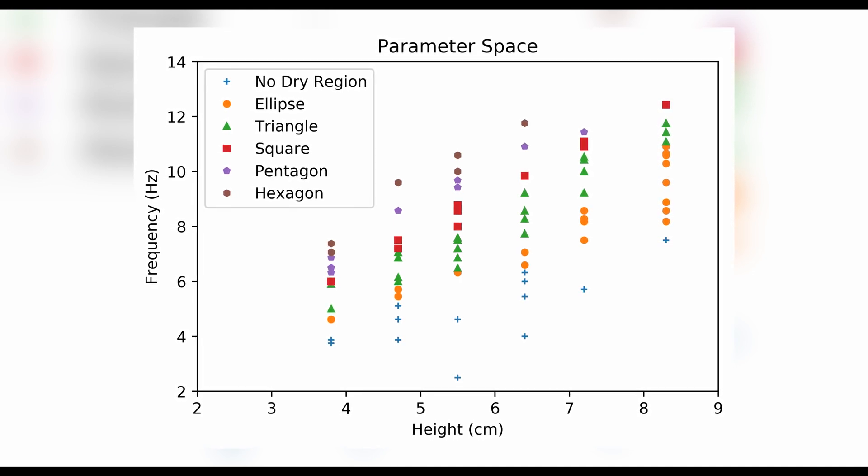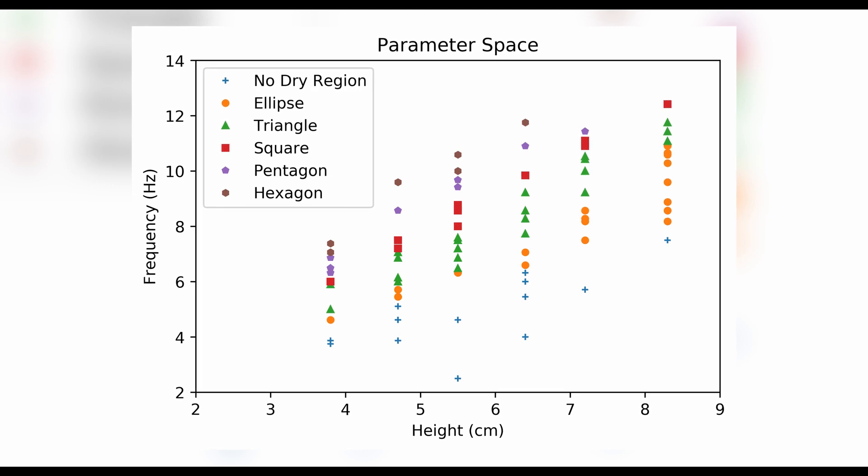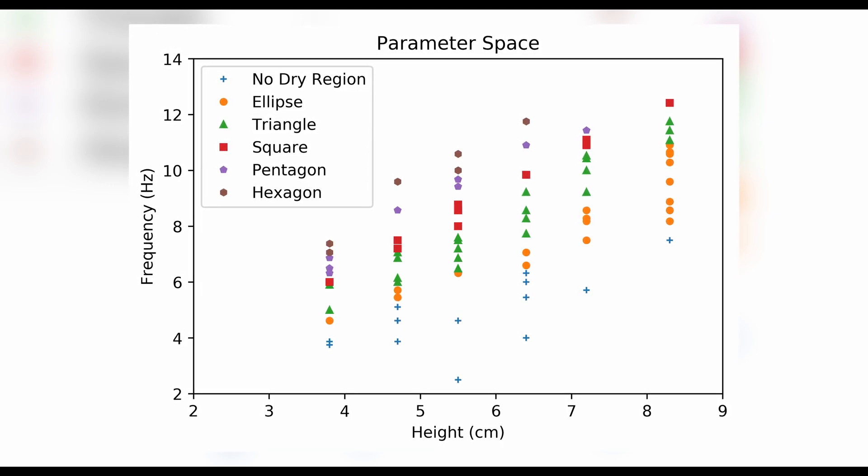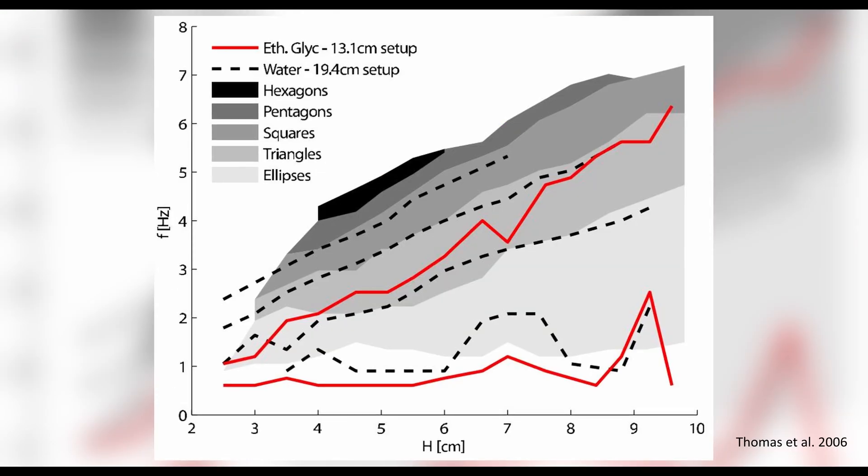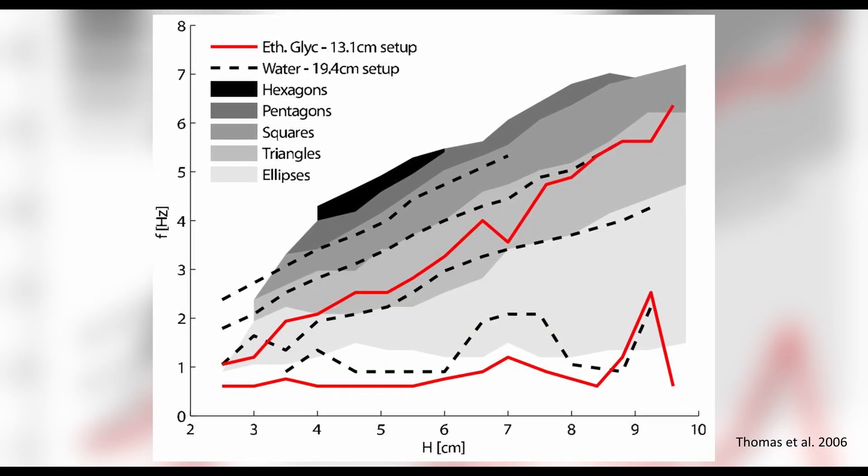You can see that there are distinct transition lines between the different polygons. The triangle is the most common polygon. It exists in a wide region of the parameter space. The subsequent polygons are harder to get. This trend matches remarkably well with what we see in literature.